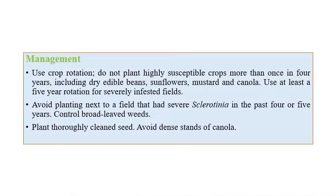For management of stem rot, crop rotation with different types of crops including edible beans, sunflowers, mustard, and canola can be recommended. Avoid planting next to a field which has a severe infestation of Sclerotinia. Seeds should be thoroughly cleaned, and dense stands of canola crops should be avoided.